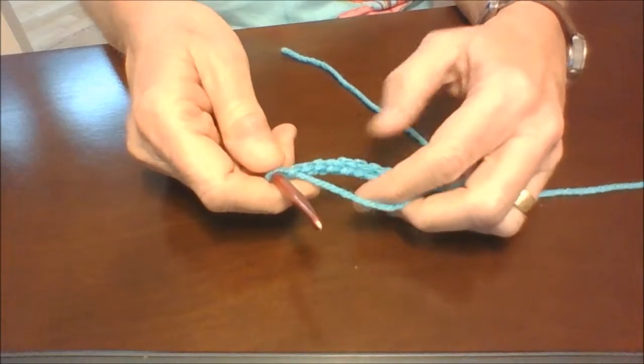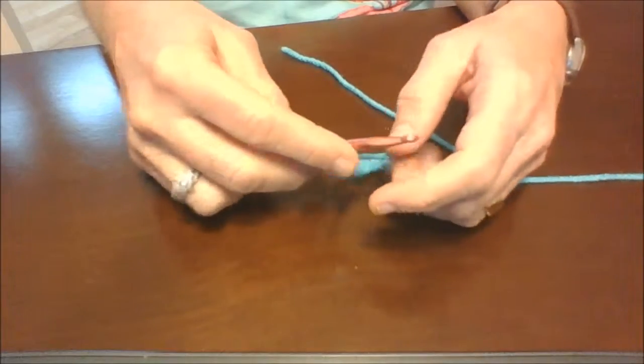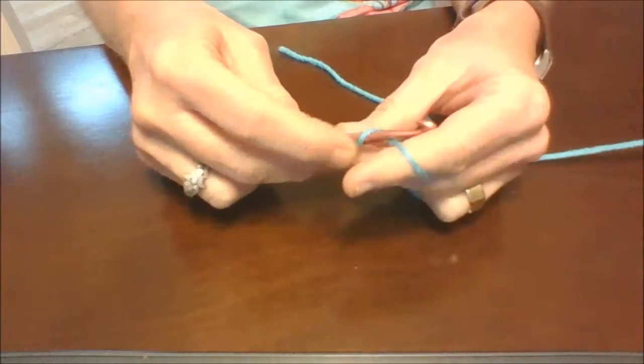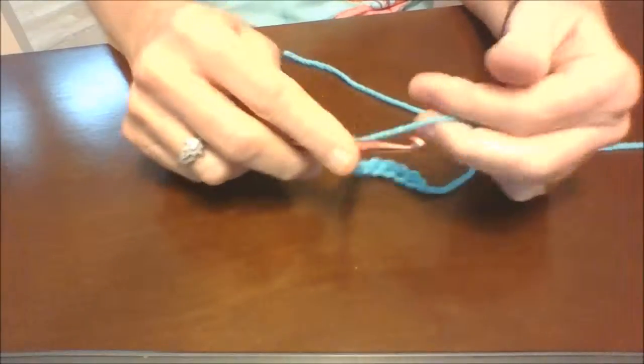And once you get it down, your stitches will look more uniform. So again, go around the hook, pull it through. And just sit and do this. Eventually, you can just sit in front of the TV and just do it.